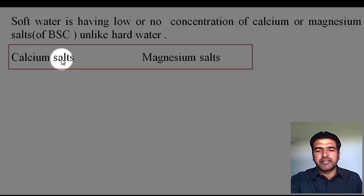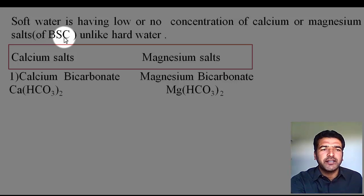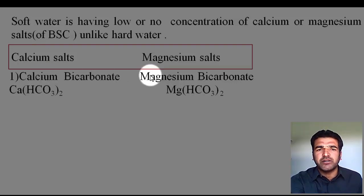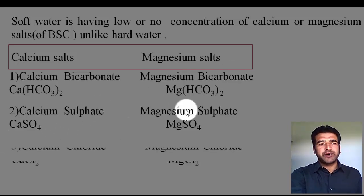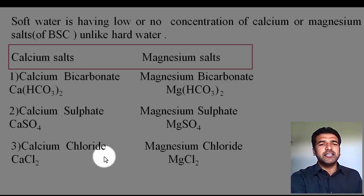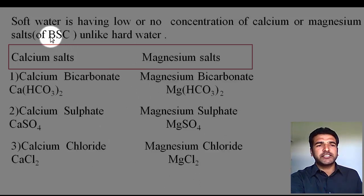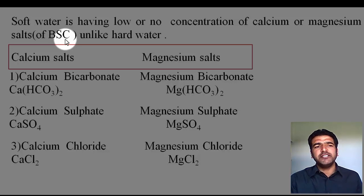Let me explain what those calcium and magnesium salts are. In hard water you can have either calcium bicarbonate or magnesium bicarbonate, either calcium sulfate or magnesium sulfate, and calcium chloride or magnesium chloride. So hard water basically contains these six salts: bicarbonates of calcium and magnesium, sulfates of calcium and magnesium, and chlorides of calcium and magnesium. Whereas soft water either has a low concentration of these salts or does not have any salts of this kind.